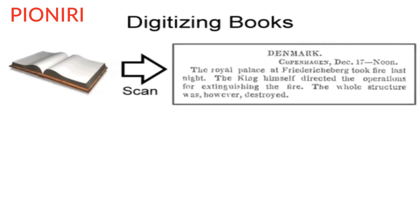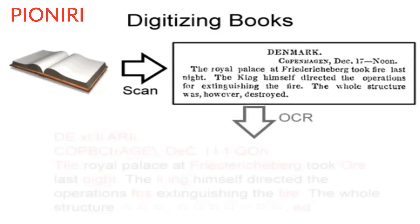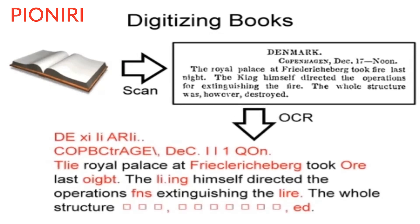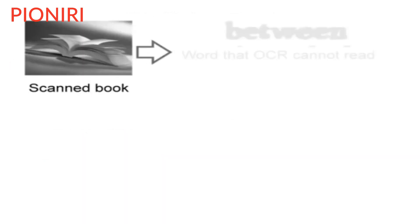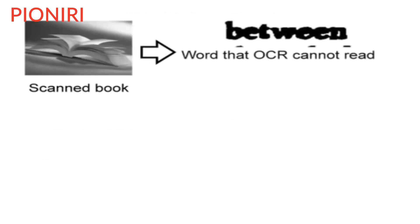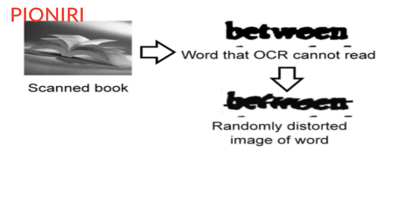Later, instead of distorted test words, real words from physical books were used. This was done by scanning books and using optical character recognition software to translate the words to digital text. These words, with some turns and twists, were then used for the CAPTCHAs.